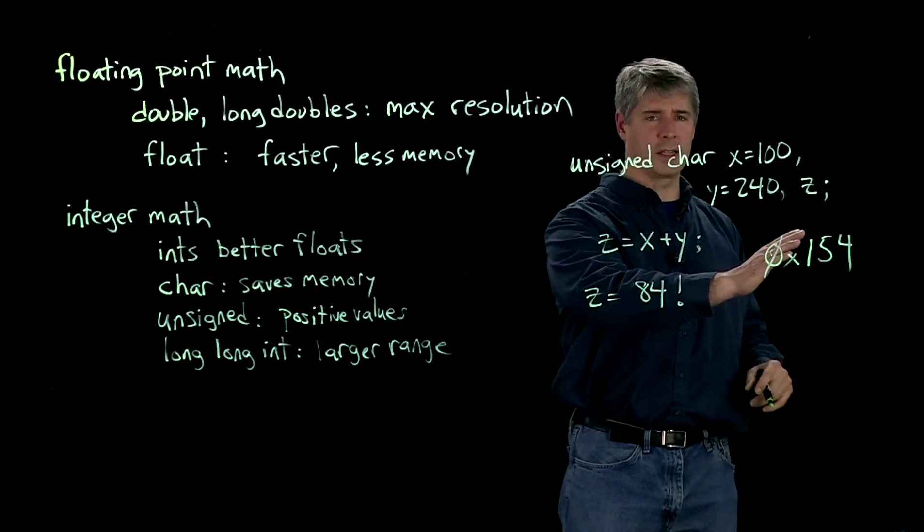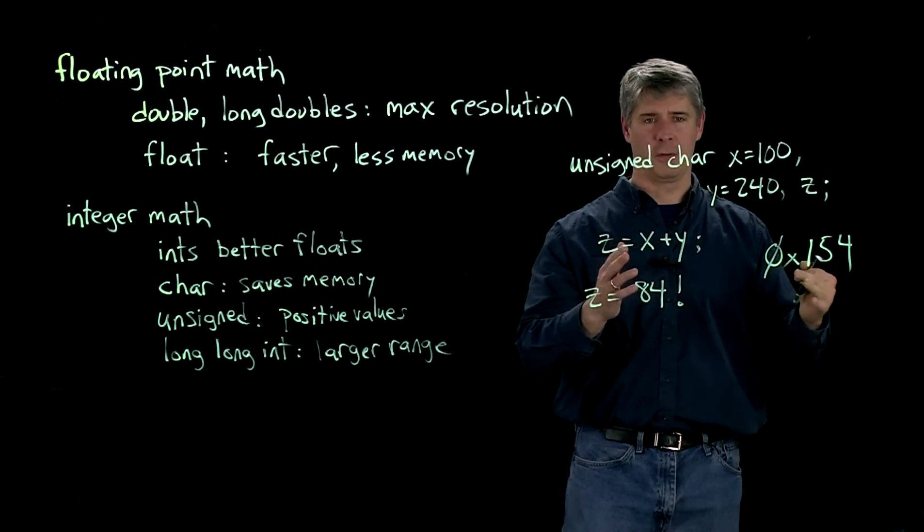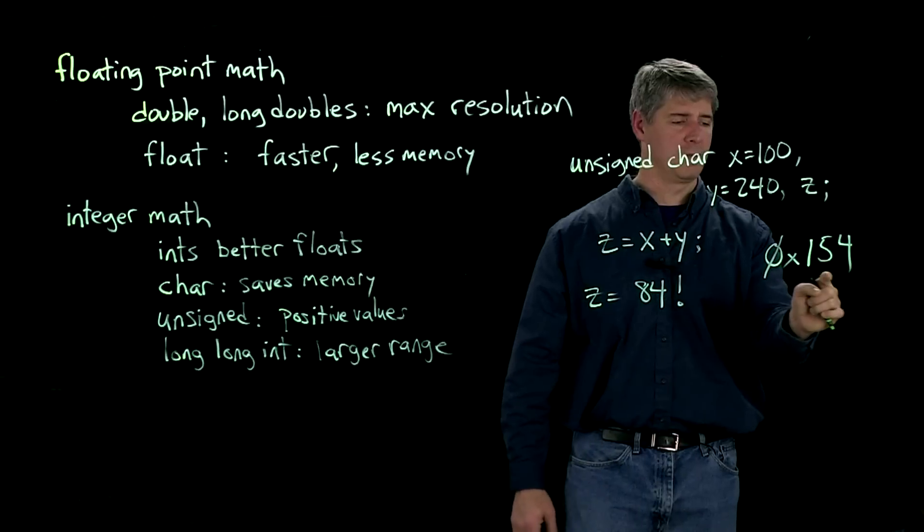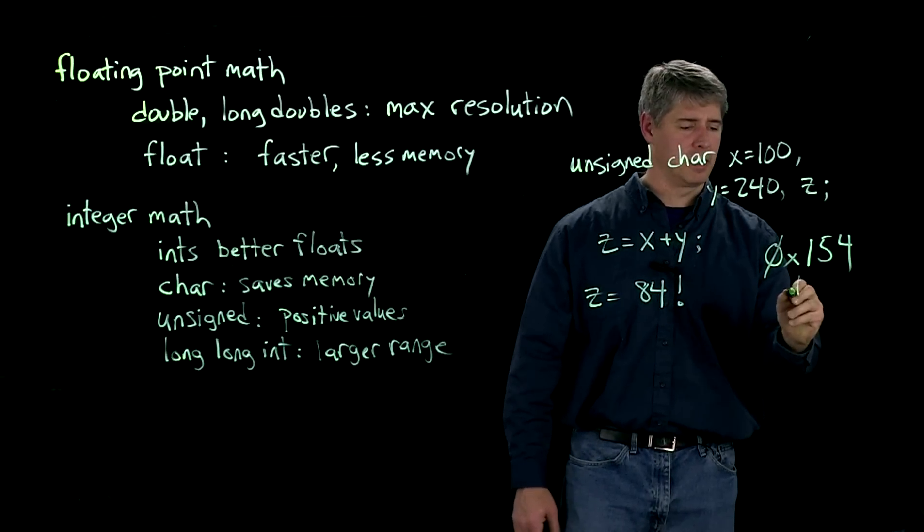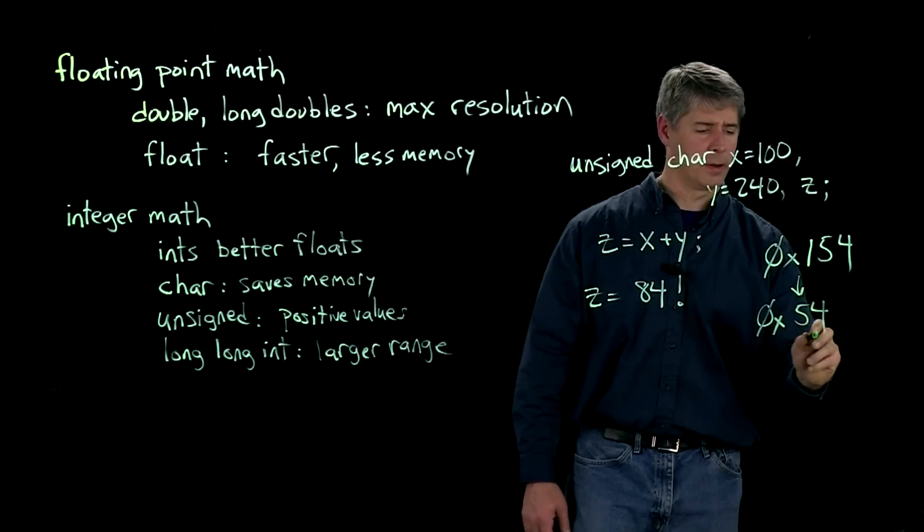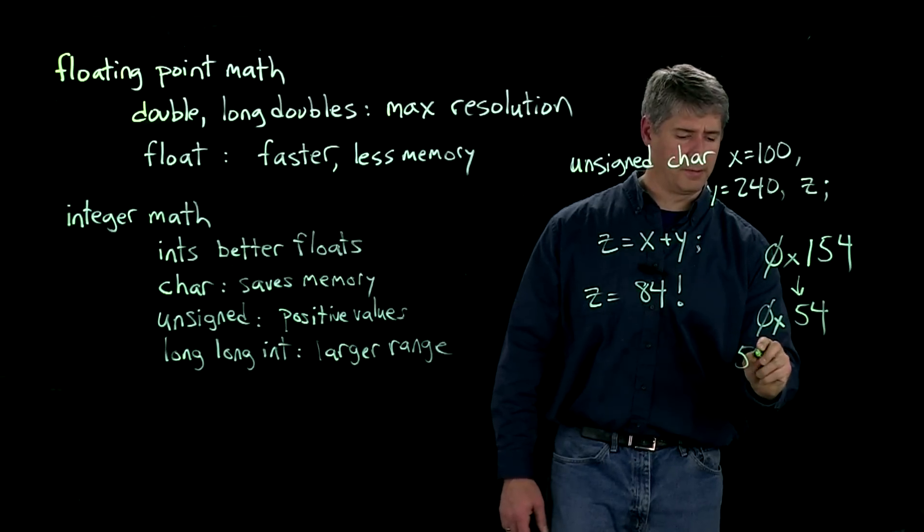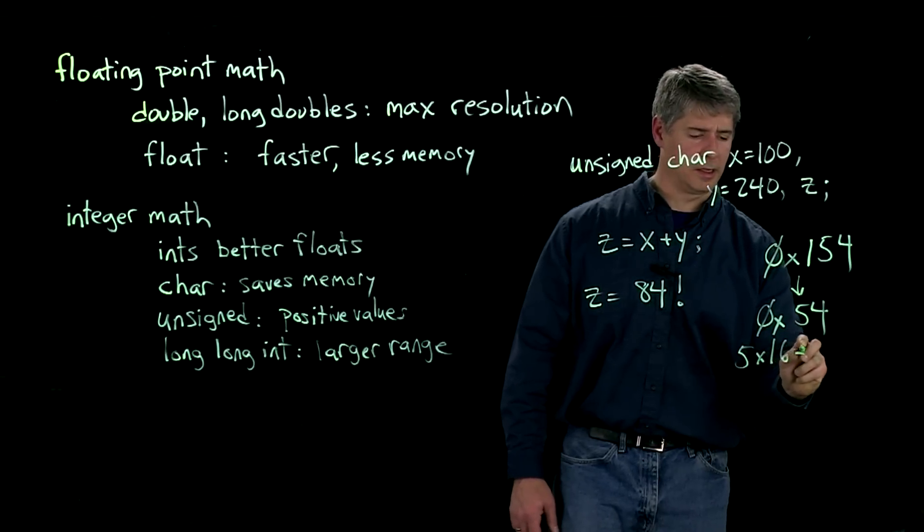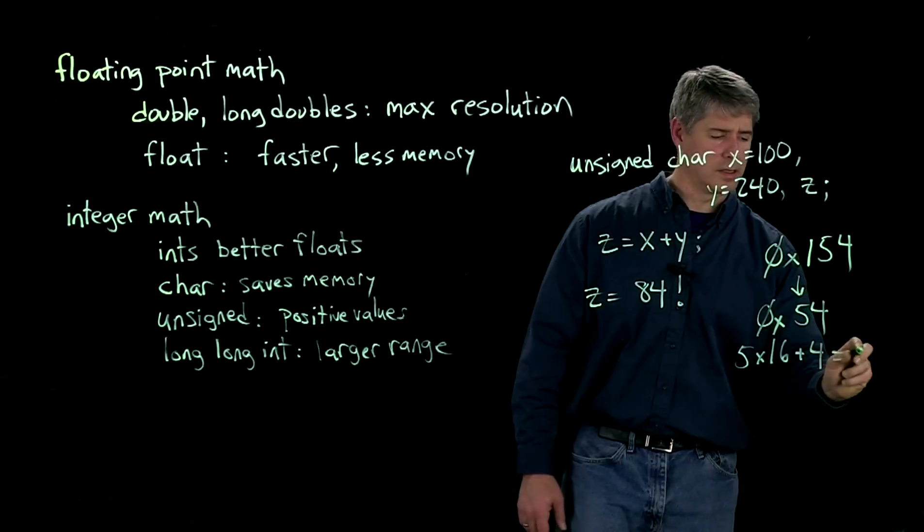But the 1 gets cut off because you only have one byte to represent z, so you only have these two left. So that becomes 0x54, and that's just 5 times 16 plus 4, which is 84.